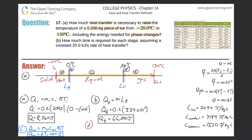Part D deals with the phase change from liquid to gas — vaporization. So q_v = m × L_V. The mass is 0.2 kg, and the latent heat of vaporization is 2,256 kilojoules per kilogram — again convert to joules. So: 0.2 × 2256 × 10³ = 451,200 joules.